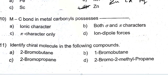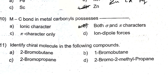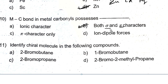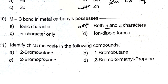Metal to carbon bond — in a metal-carbon bond, because of the synergic effect, it possesses both sigma and pi character. It can possess both sigma and pi character.